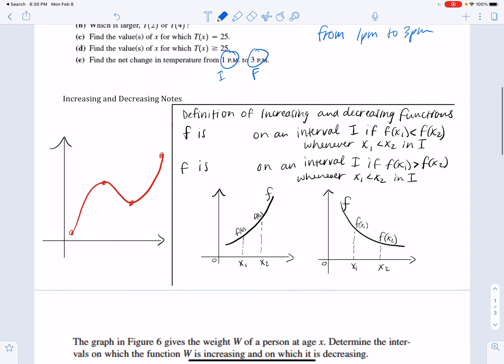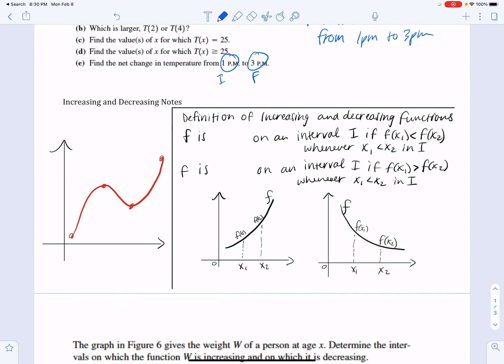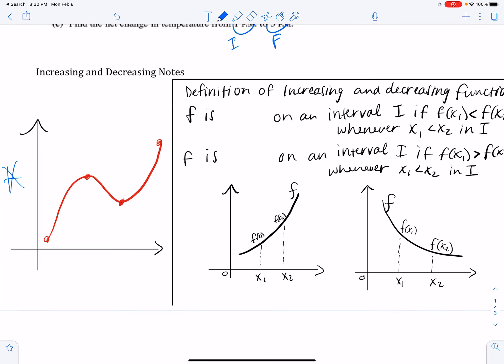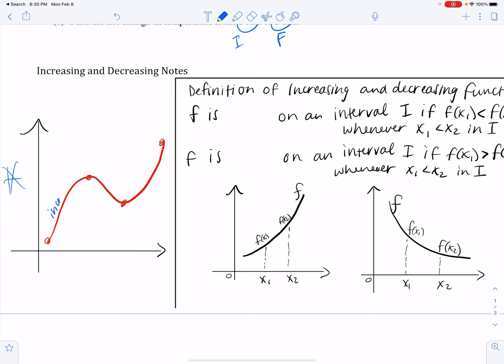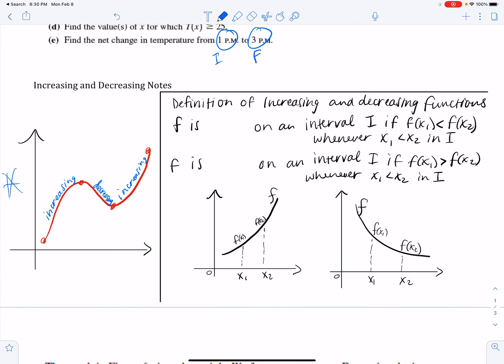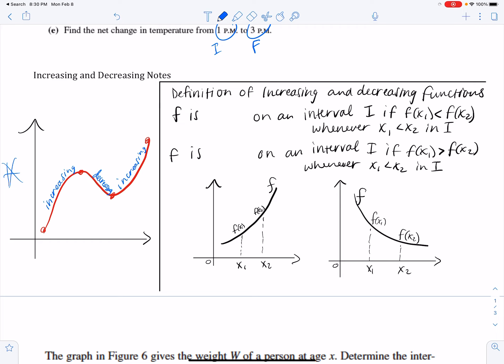All right, so here are a couple notes on increasing and decreasing. It probably seems obvious to you, but here on the side is a little sketch. We can tell that obviously f is increasing at this point, it's decreasing right here in the middle, and then it's increasing again at the end. Here are some specific definitions in math of what increasing and decreasing is. The definition of increasing functions: f is increasing on an interval if the first y-value is less than the second one, whenever x1 is less than x2. So that means that whenever the first y-value is smaller and then it's going up, that's going to be increasing.